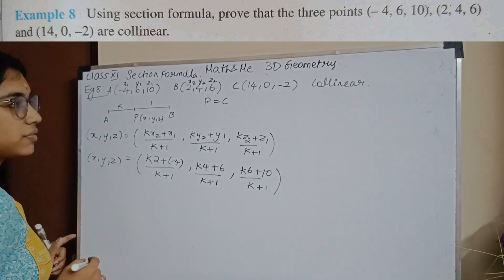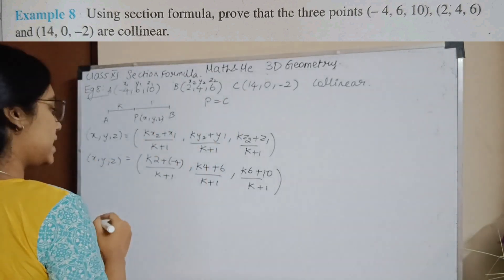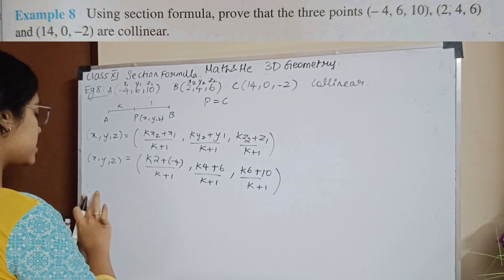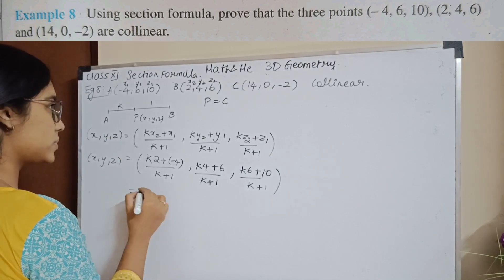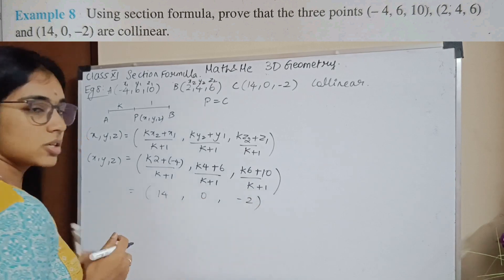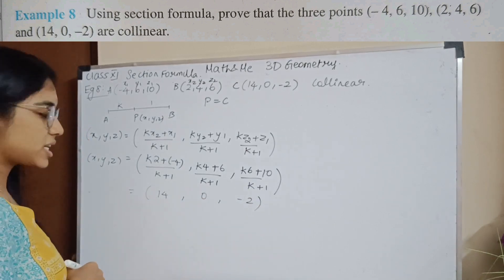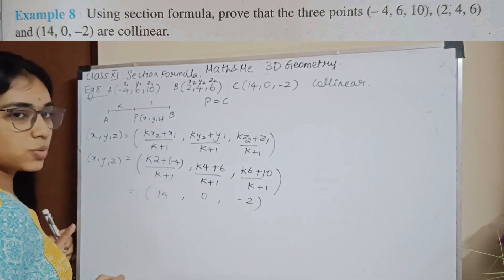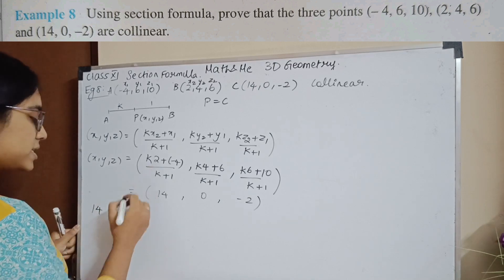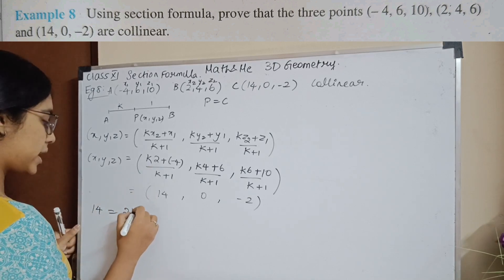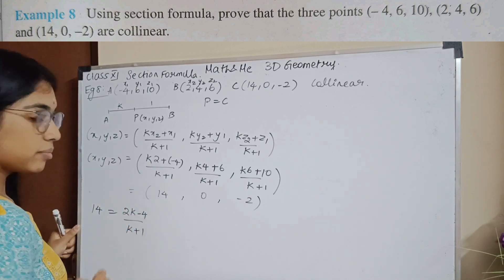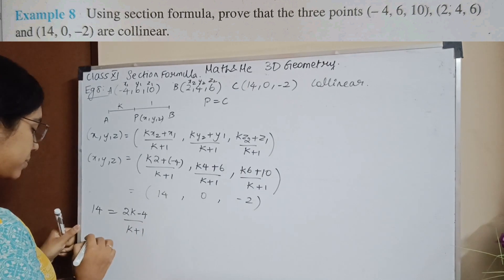Now if they coincide with point C, I have point C which is (14, 0, minus 2). So I will check. First, let me take the X coordinate. So what will I have? 14 equals 2K minus 4, divided by K plus 1.